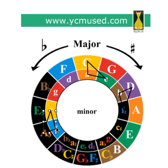And following that same pattern, the G minor root position triad would be G, B-flat, and D.